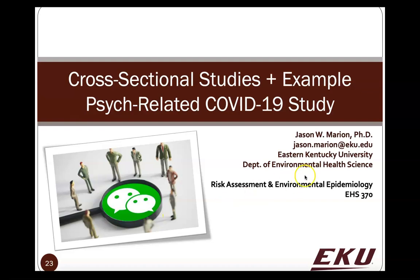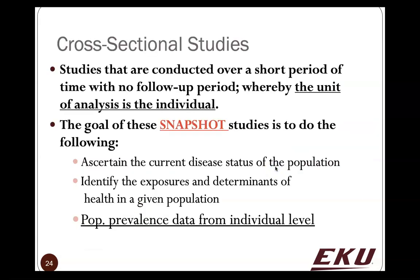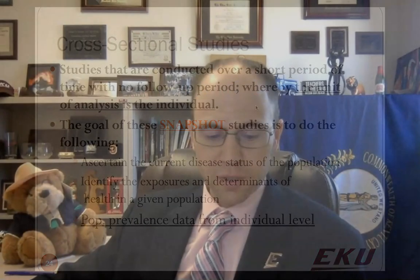So in this video we're going to start with a quick review. You already know that snapshot studies are the cross-sectional kind — these are studies conducted over a short period of time. There is no follow-up period, and the unit of analysis is the individual. We gather information from people one time and don't go back, because that follow-up would suggest it's longitudinal, or what we might call a cohort study.